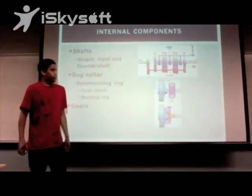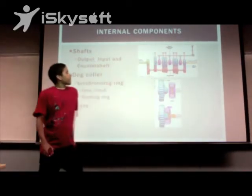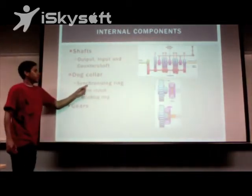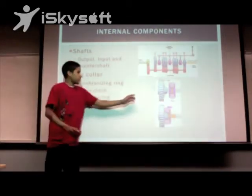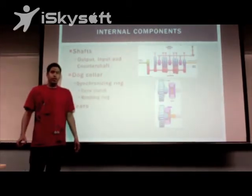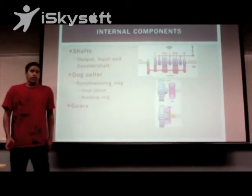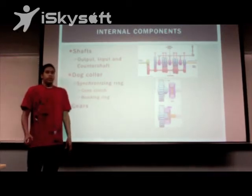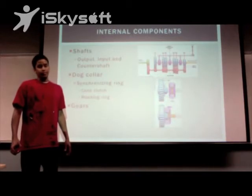Dog collars are used in order to select a gear using the shifter fork. The dog collar consists of a synchronized ring, which acts as a cone clutch. The cone clutch slides over the gear it is to be engaged with in order to shift seamlessly. The gears within a transmission are usually of the helical type, which allows for smooth engagement and little to no clatter.